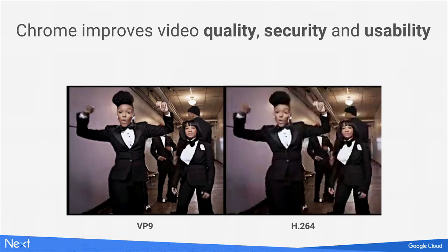Chrome supports the latest video codecs, including VP9, to improve quality and reduce bandwidth. The image using VP9 is clear and uses 30% less bandwidth than H.264. Chrome also supports DRM, which allows you to protect your sensitive corporate videos. This support is deployed through a component called Widevine, available across Mac, Windows, Linux, Android, and Chrome OS. We now allow users to download secure content, and offline video playback is supported as well.